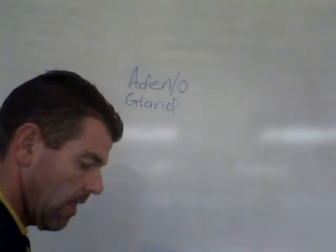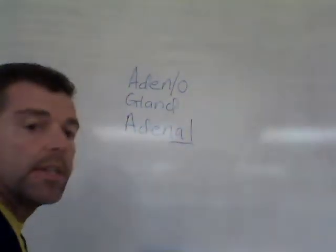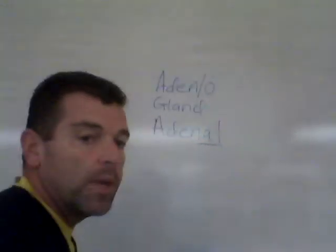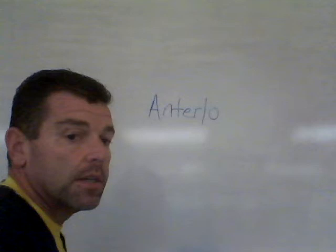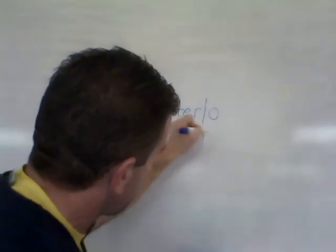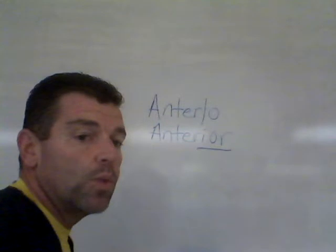Let's take another term: 'adeno.' Adeno is a combining form that means gland. Add the suffix AL to it, meaning pertaining to, and we get 'adenal,' pertaining to a gland. Next, 'antero' means front. If we add IOR, another combining form meaning pertaining to, we get 'anterior,' which means the front of a structure.